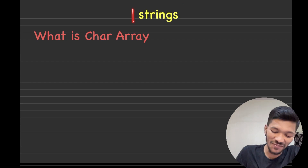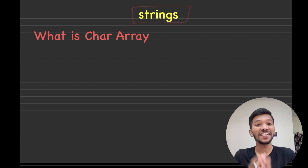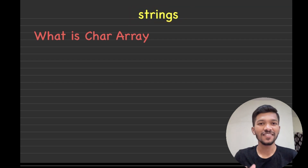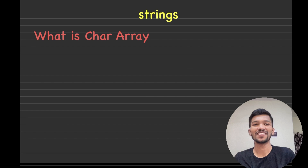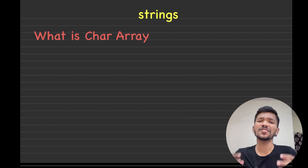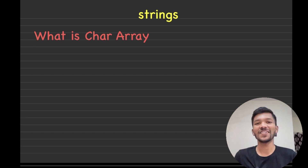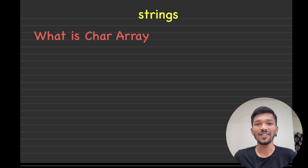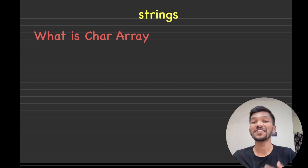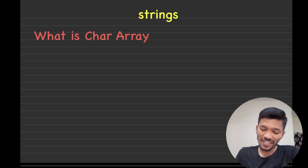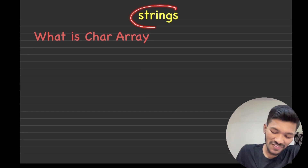In this video, we will be starting with strings. Strings are the most important things in any programming language because they have numerous operations we can perform on them. And when you go to real life production code, strings play an important role. So let's understand what a string is.